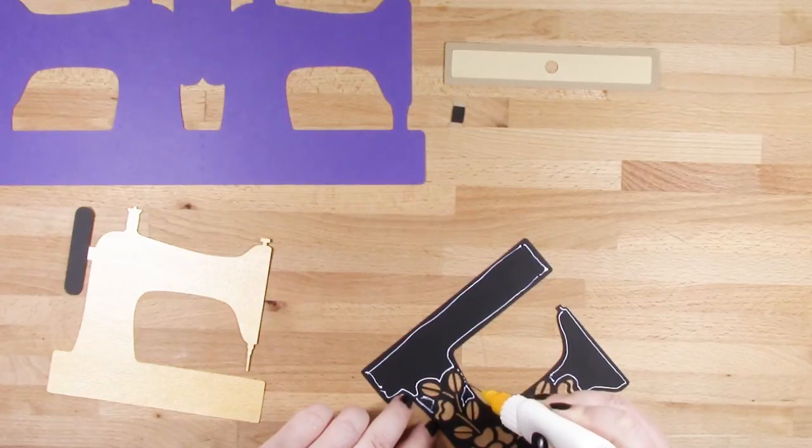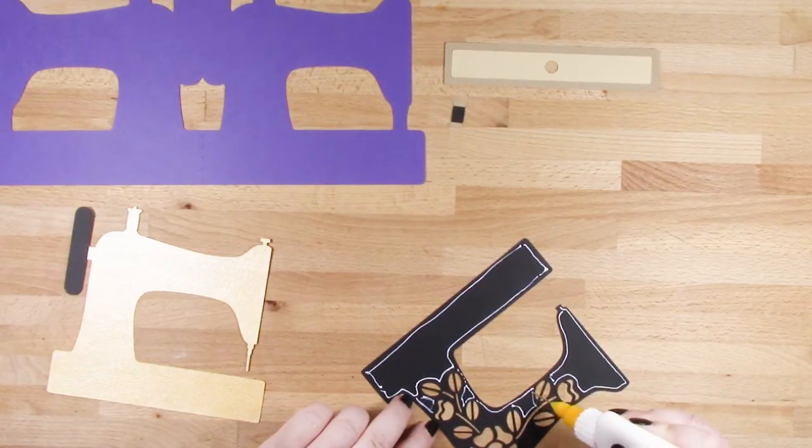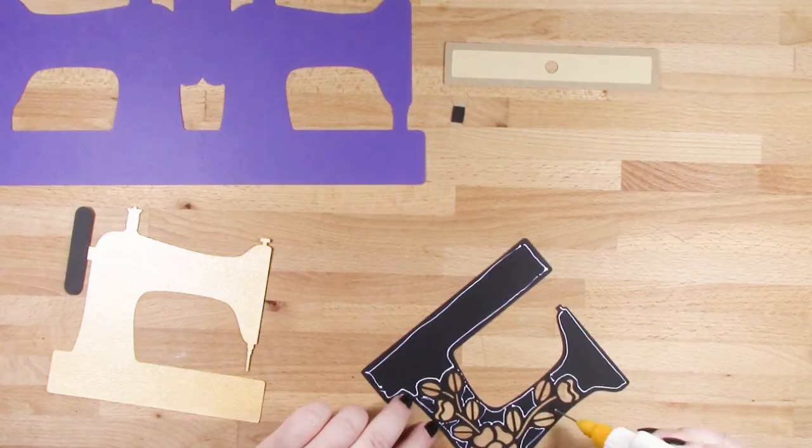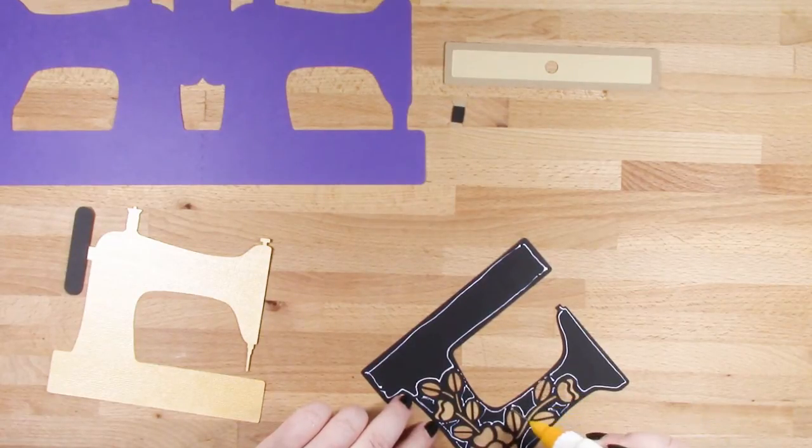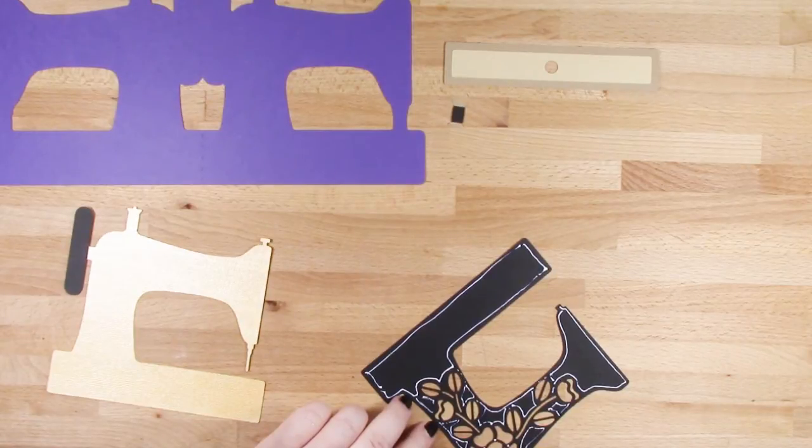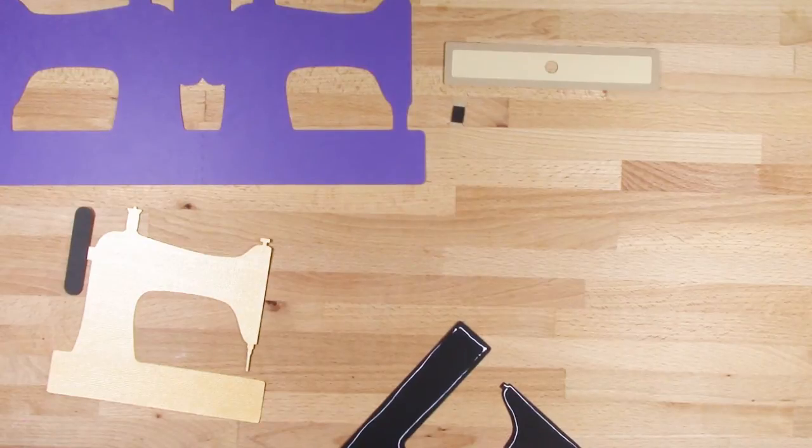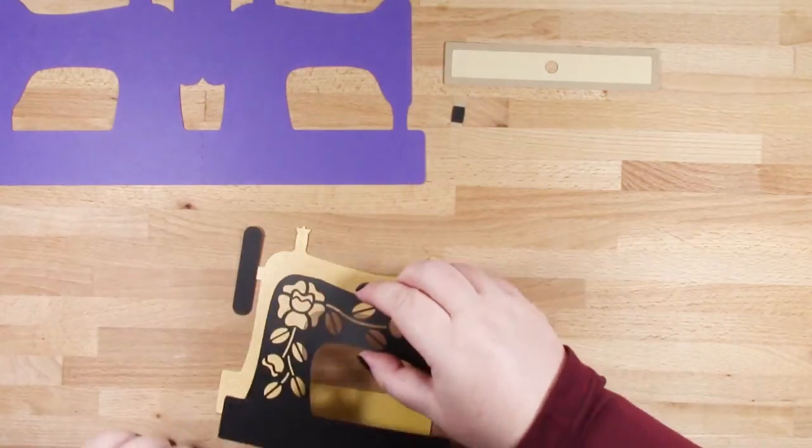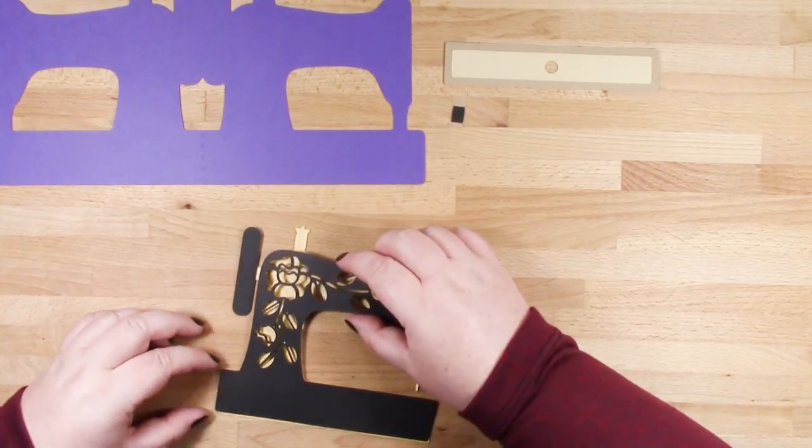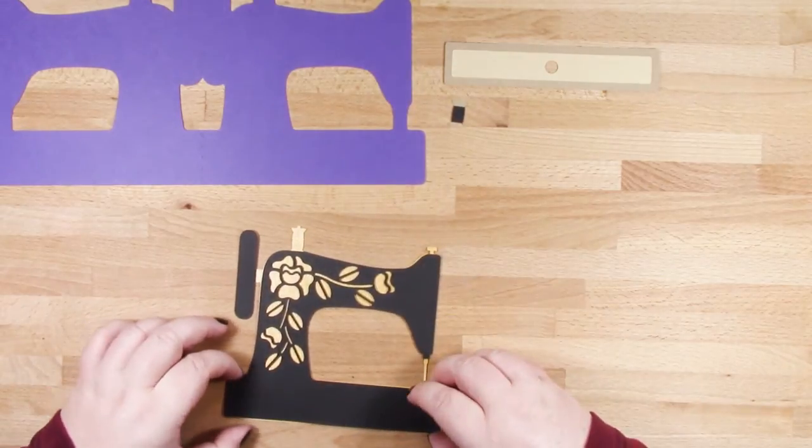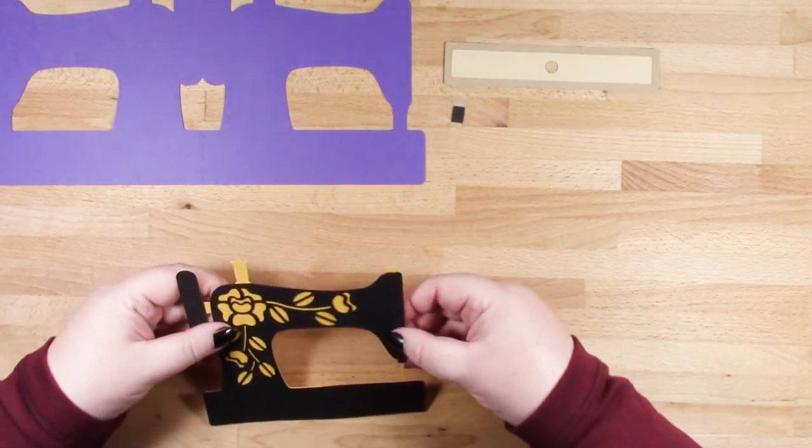Then I'm just going to pop some glue in wherever I can here. Okay, now this fits directly over the gold piece. You don't want any of the gold showing around the edges if you can.